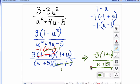And that is your answer. If you wanted to go ahead and distribute the negative 3 through, you could do that as well, but this is perfectly acceptable.